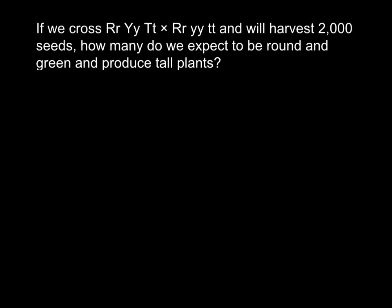In this video I want to explain how to solve genetic problems using the rule of probability. Here is a problem: if we cross one parent of this particular genotype with another plant of this genotype and harvest 2000 seeds, how many do we expect to be round, green, and produce tall plants? Even if you don't know how to approach such a problem, in five or six minutes you will be able to solve it very easily.